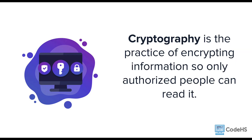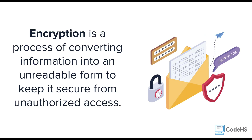This is where cryptography comes in. Cryptography is the practice of encrypting information so only authorized people can read it. Cryptography uses encryption, which is the process of converting information into an unreadable form. This helps to keep it secure from unauthorized access. Only those with verified authority, such as a password or a secret key, should be able to unscramble the message and read the original information. It's like putting your message in a secret language that only those who know the code can understand.